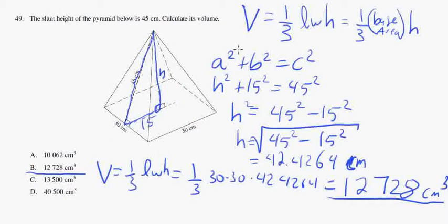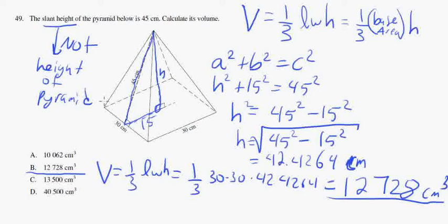That's good. You just have to remember that slant height, so this is not the height of the pyramid. So if you're given the slant height, you may need to find the actual height of the pyramid, and you can do that using Pythagorean theorem.